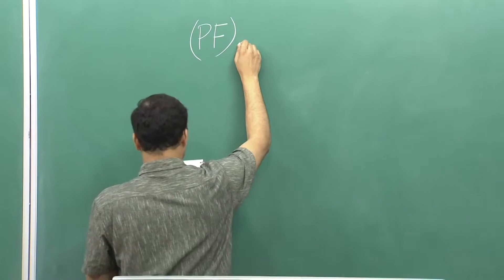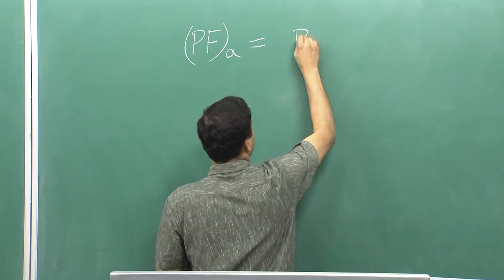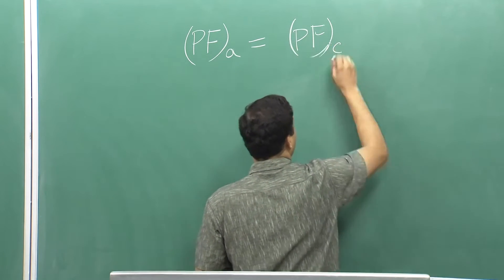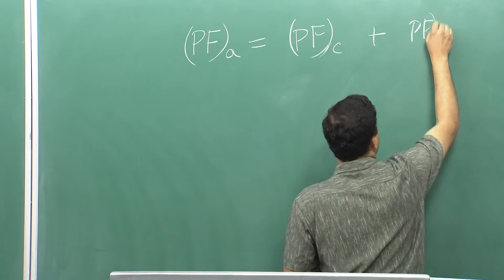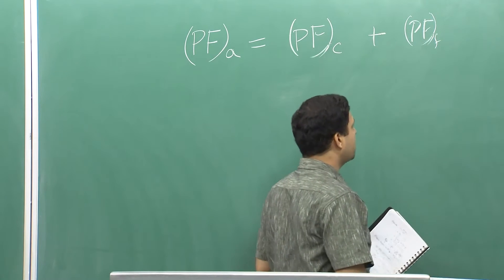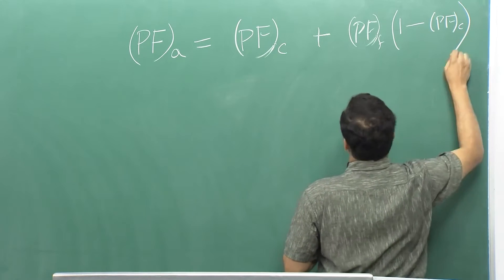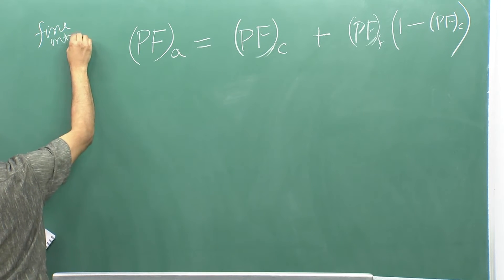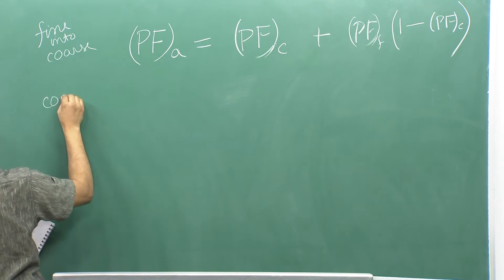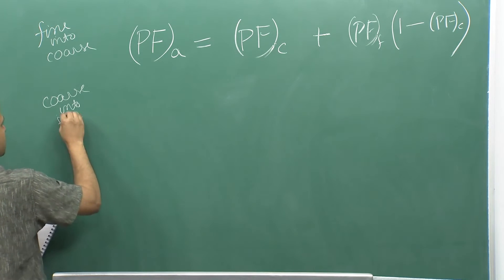For the first case, where we had fine particles going into the coarse, we had an effective or apparent packing fraction given by a relation involving pfc — the packing fraction in which the coarse particles are getting packed — and pff, which represents the packing fraction in which the finer particles are getting packed.